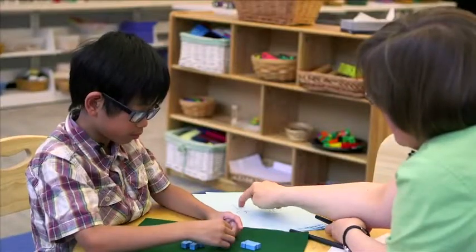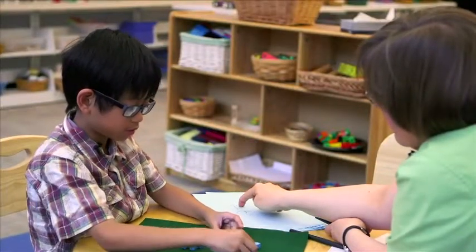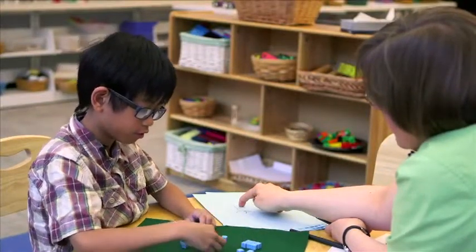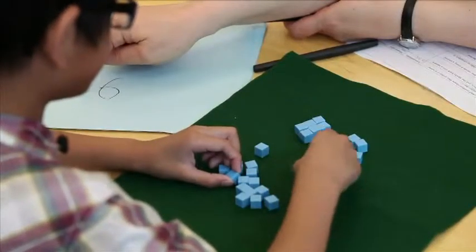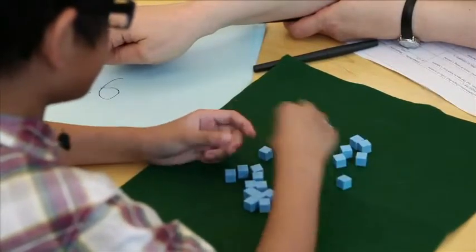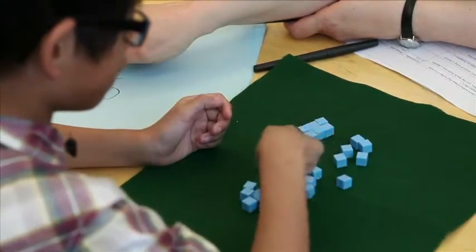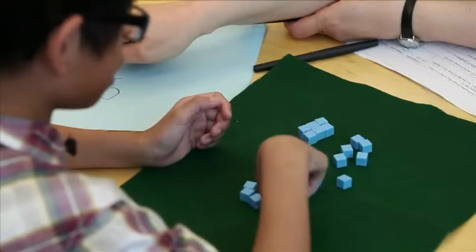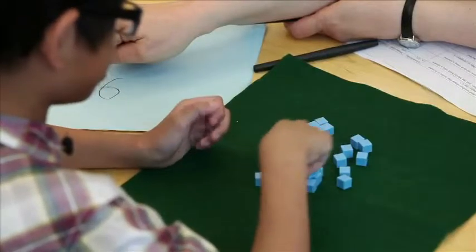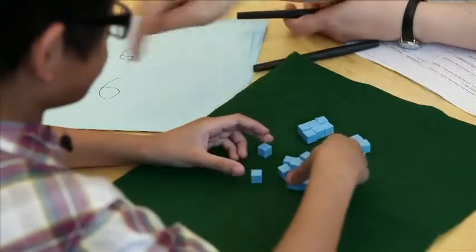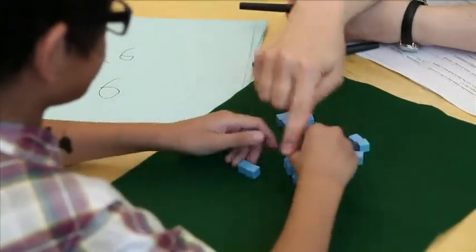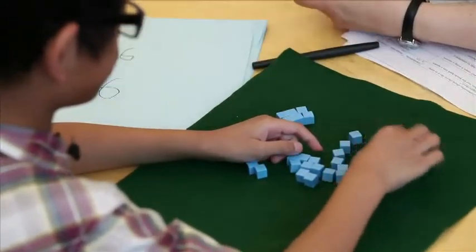What does this 2 mean when we write it down? It means 1, 2, 3, 4, 5, 6, 7, 8, 9, 10, 11, 12, 13, 14, 15, 16, 17, 18, 19, 20. So you said this is the 6, and then you counted these, and this 2 is the 20?